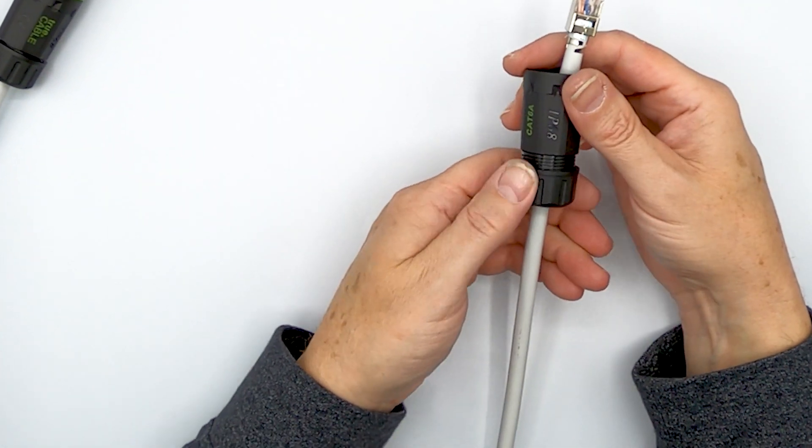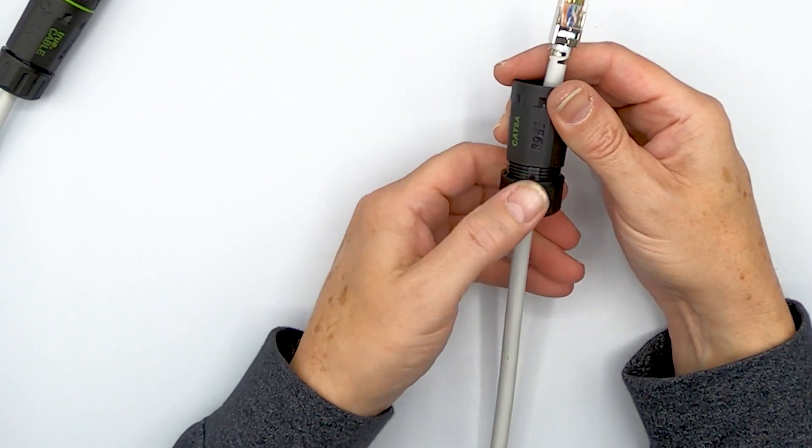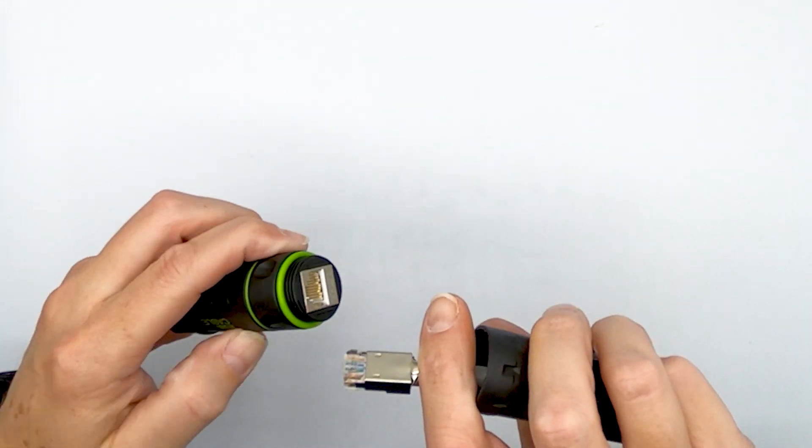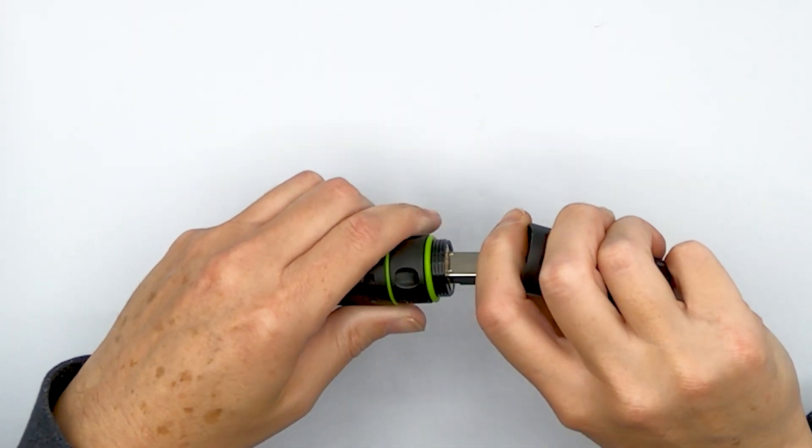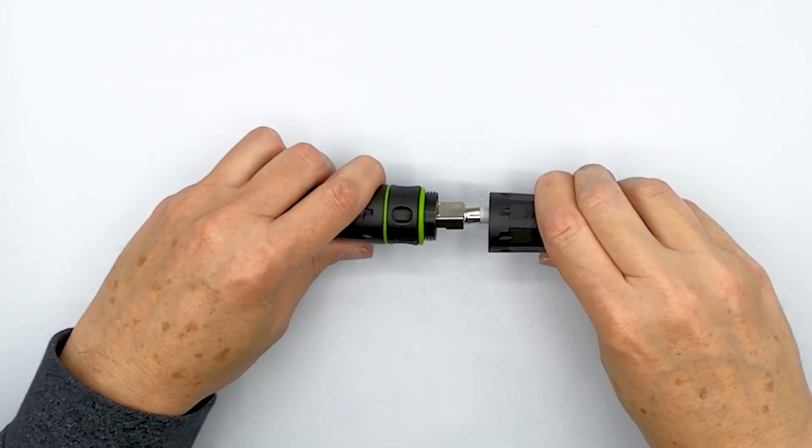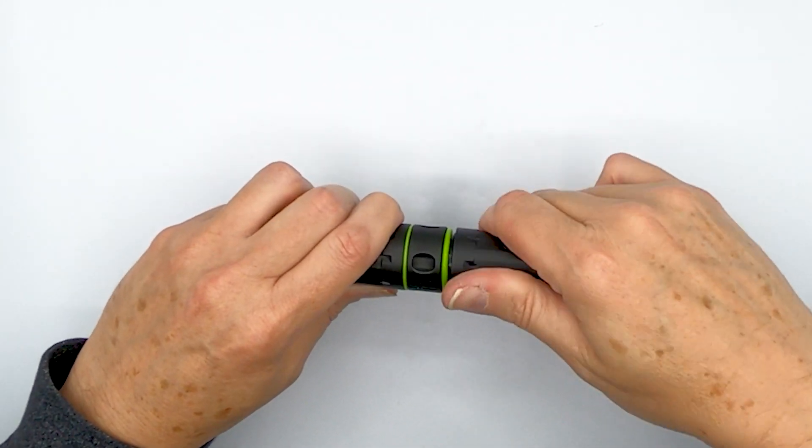Bring up this rear piece. Just put it on there so it's starting to thread. And then you're going to connect it into the other side. Just like so.